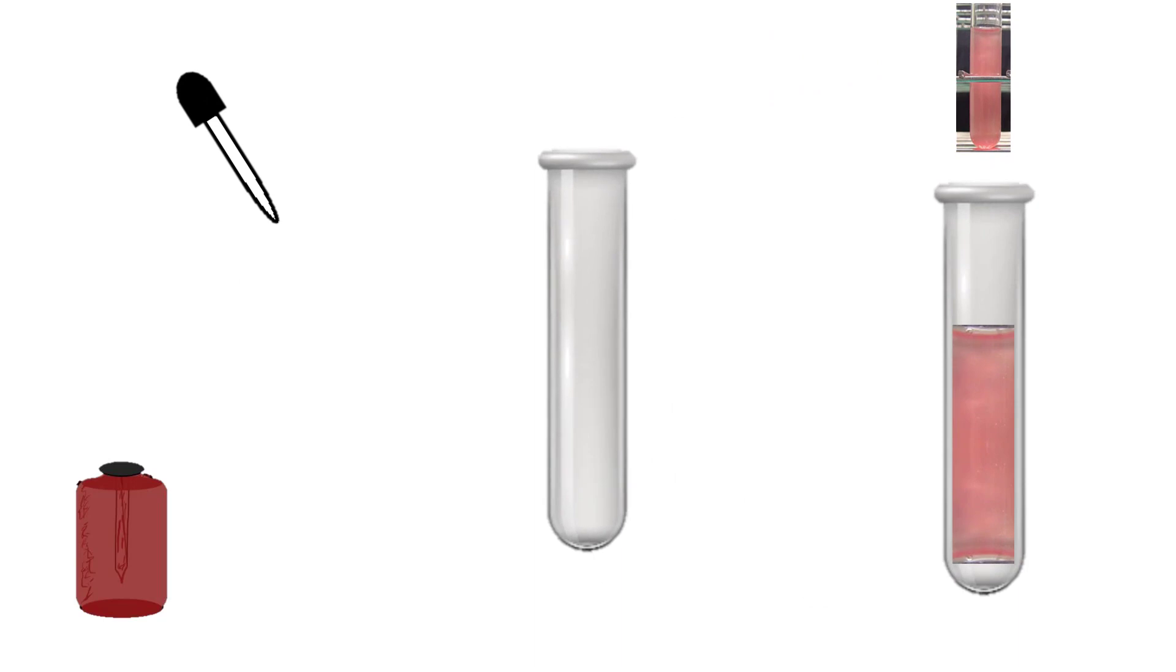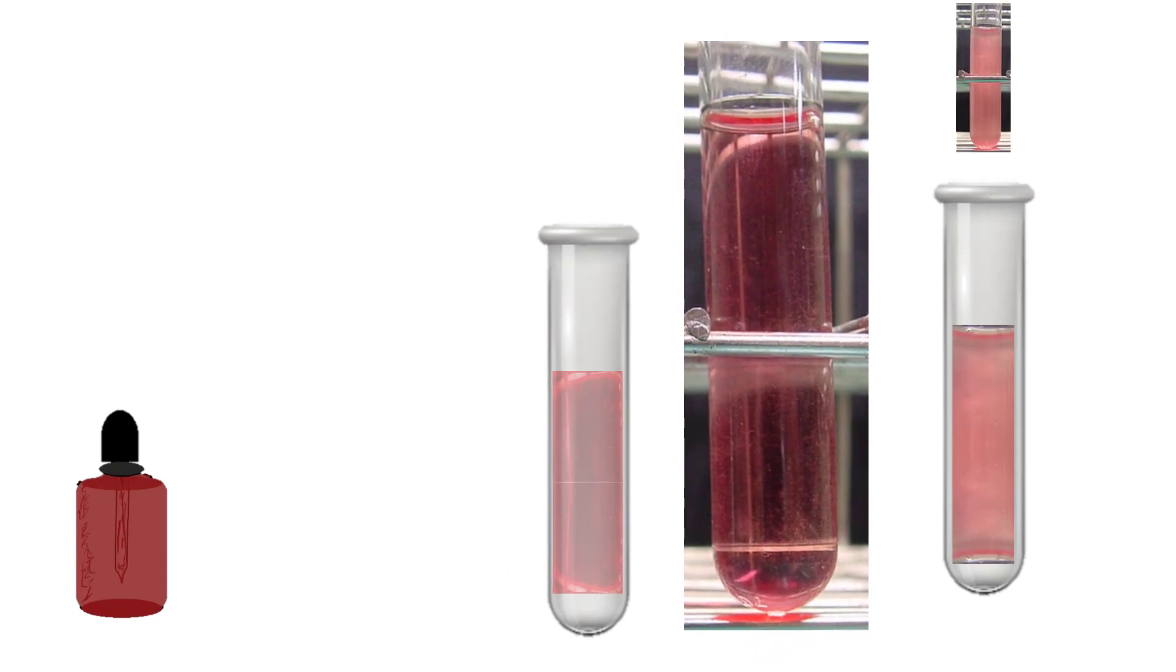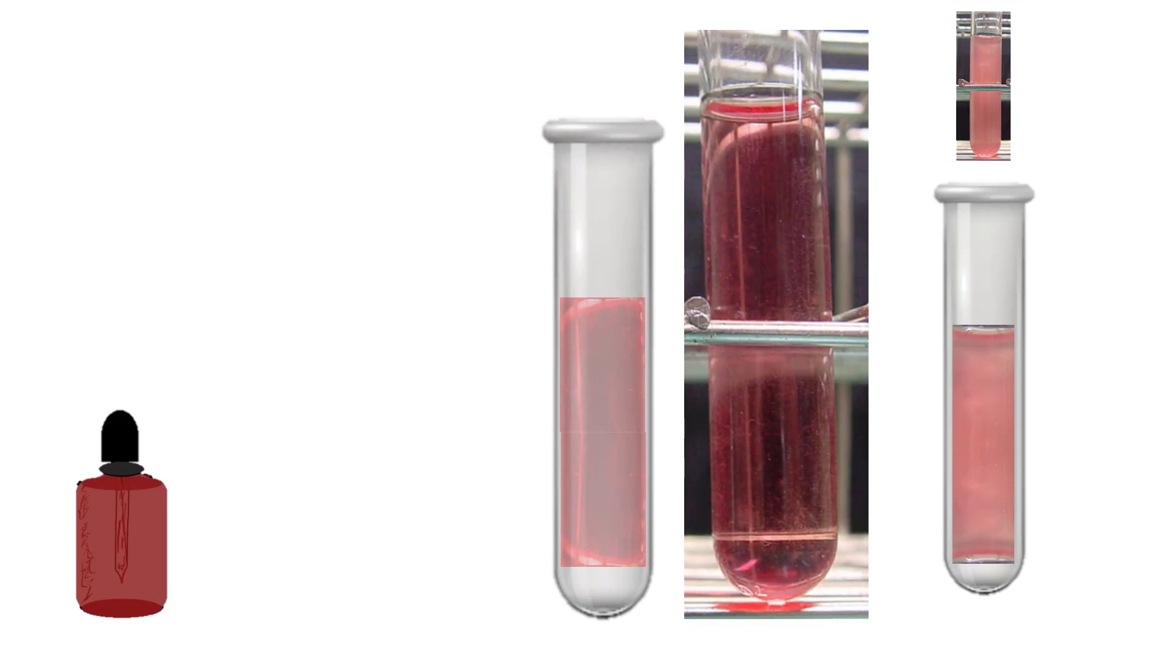When we place red blood cells into a hypotonic solution, the cells will burst and undergo lysis and therefore do not diffuse light. Here, the solution would turn a clear red color.